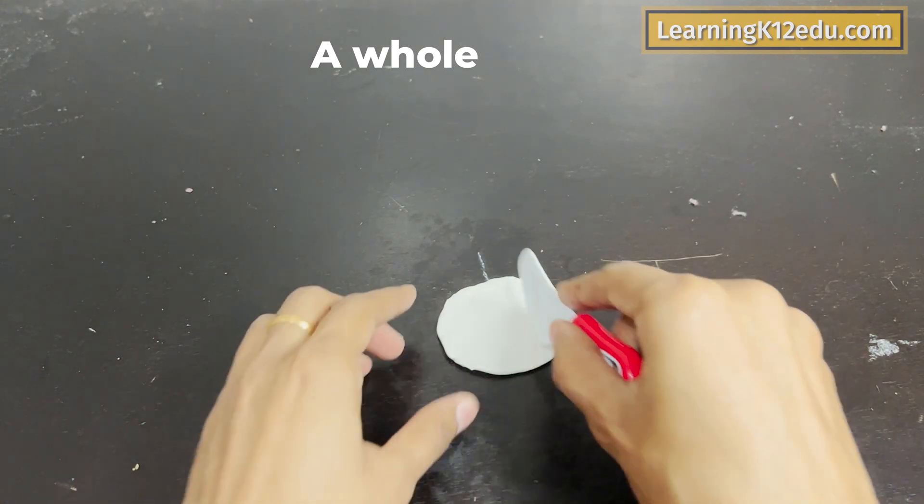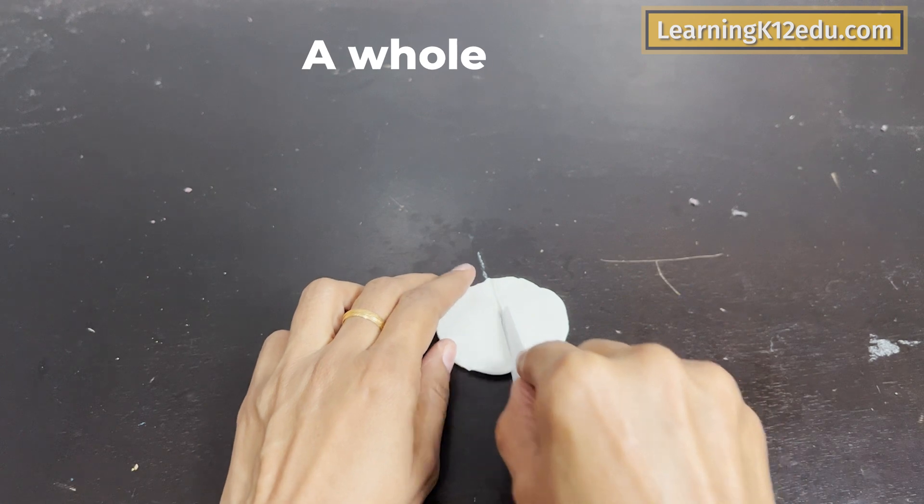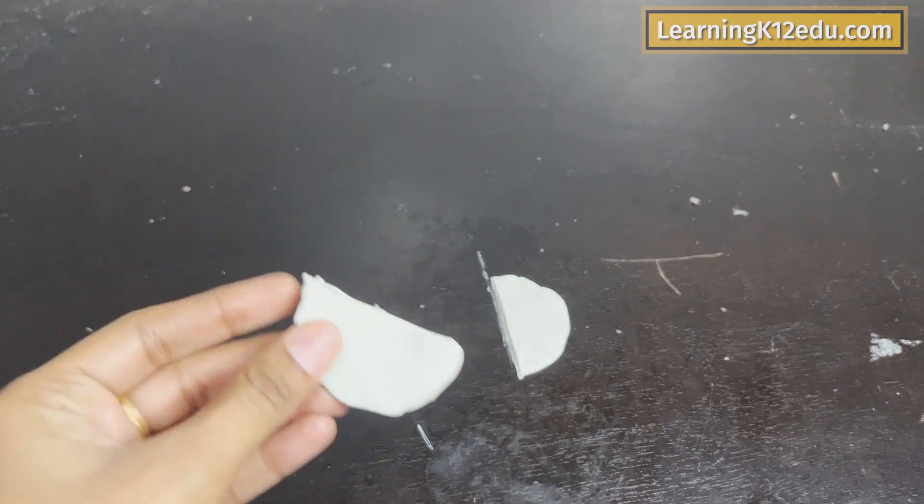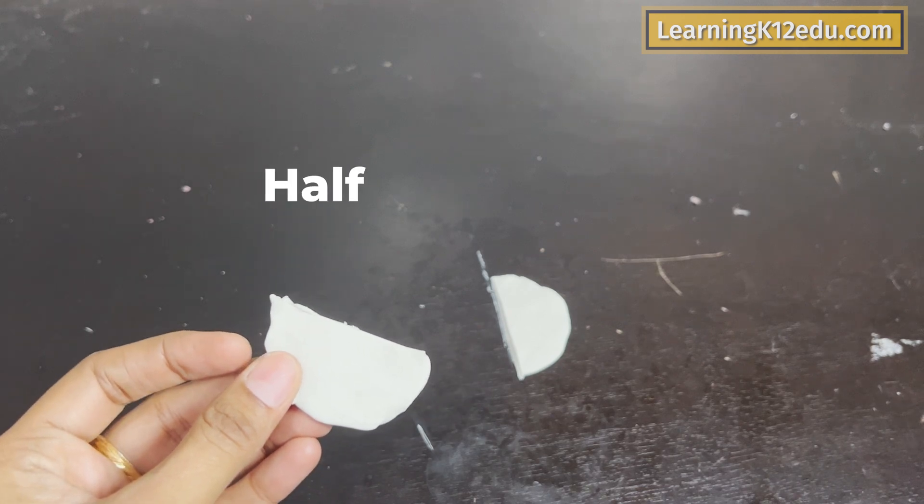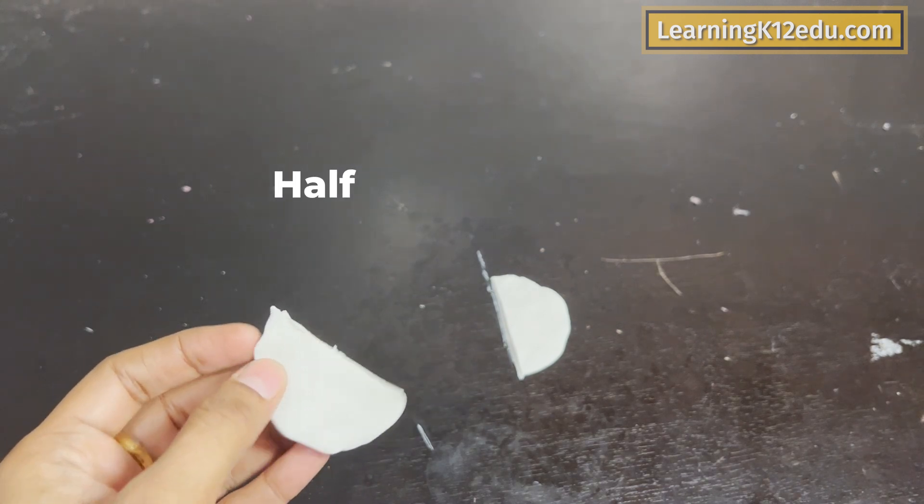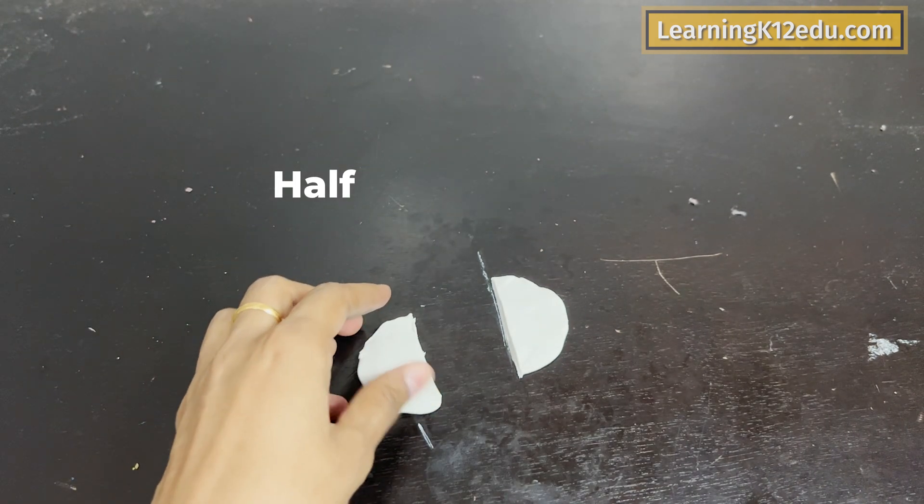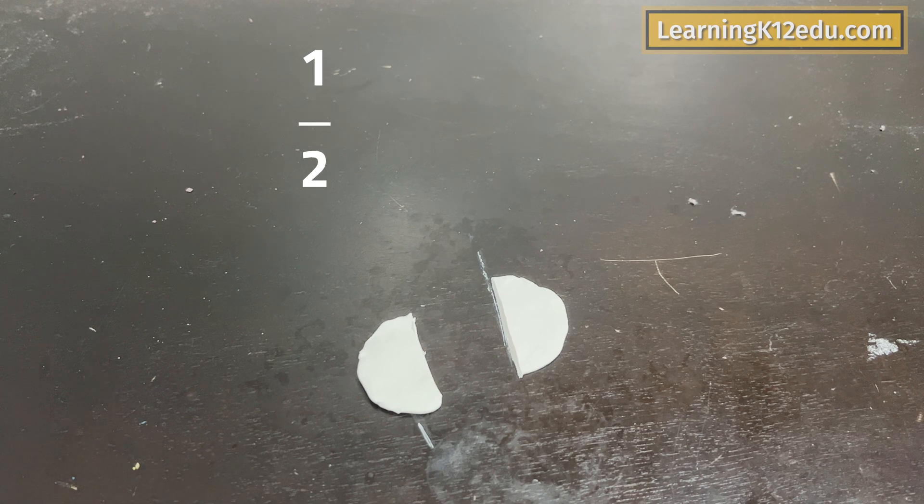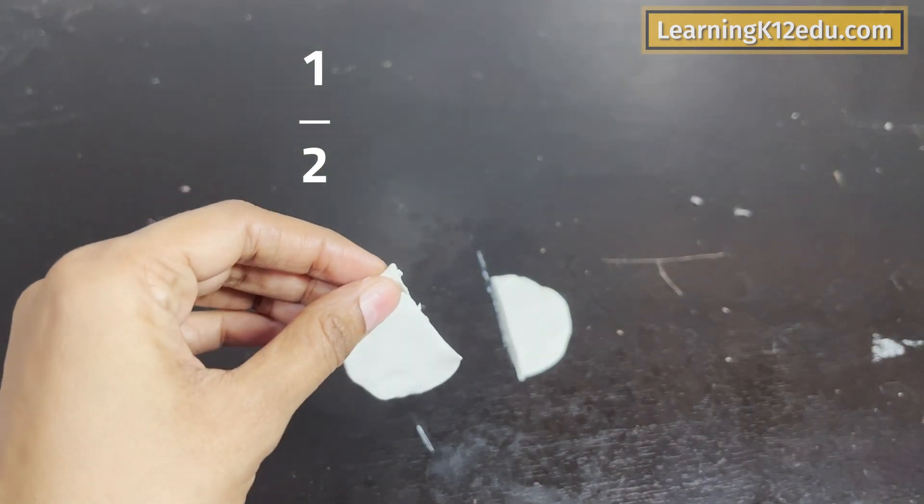And when I cut it into two equal halves, each part represents half of the whole. So the clay as a whole was represented as 1. But the half part of clay is represented as a half or 1 by 2.